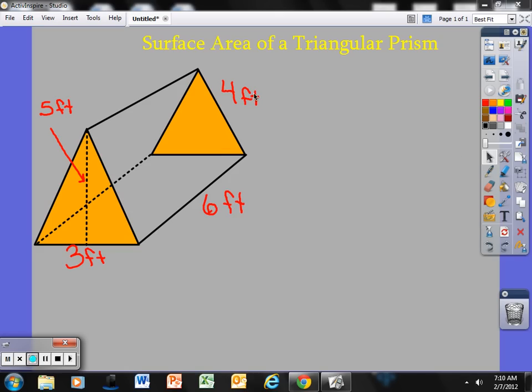If I'm looking at this problem here, surface area of a triangular prism. I know it's a triangular prism because both bases are triangles. I've already labeled some of the dimensions of the shape. We have the height of this triangle is 5 feet, the base is 3 feet. We have the length of this rectangle here, the bottom part, is 6 feet. We have the diagonal here, which is 4 feet.